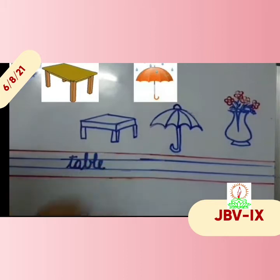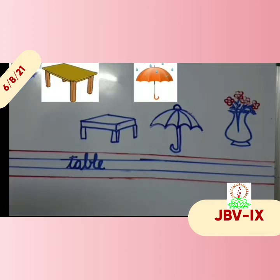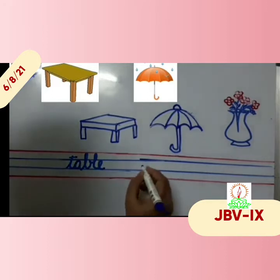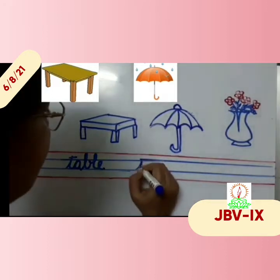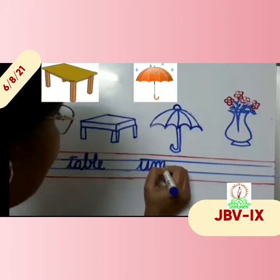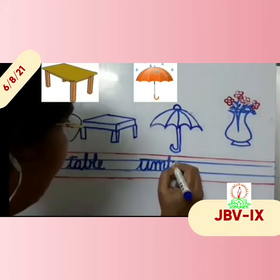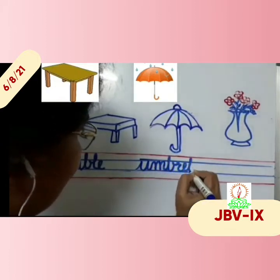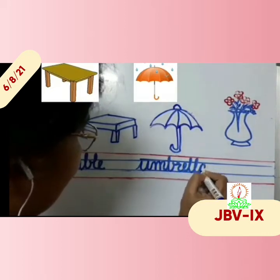Now next picture — what is this? This is an umbrella. Children, when you go out during rainy season or on a sunny day, you take umbrella. It protects us from the sun rays, or in the rainy season, it protects us from the rain. Now the spelling — what is the spelling of umbrella? U-M-B-R-E-L-L-A.